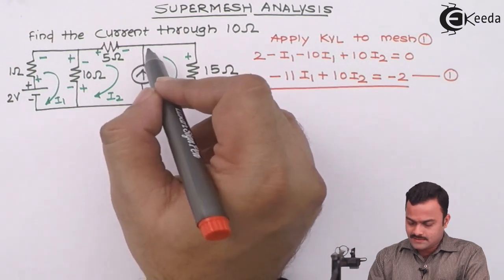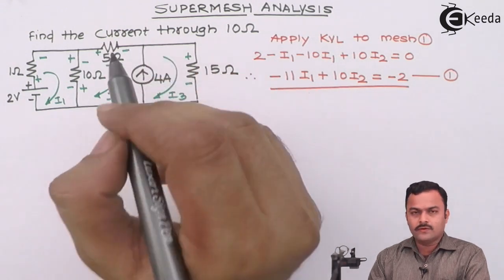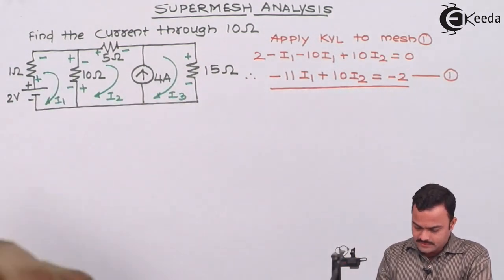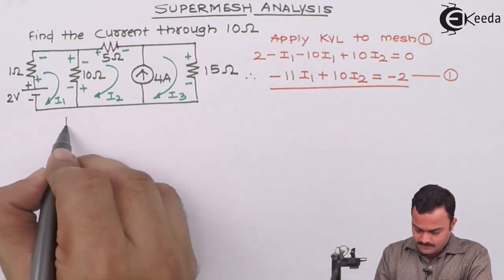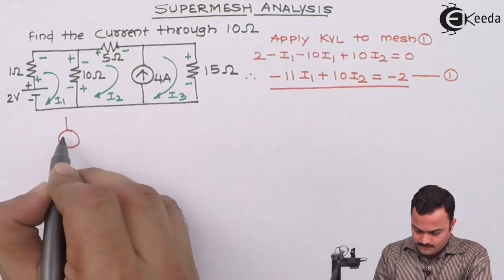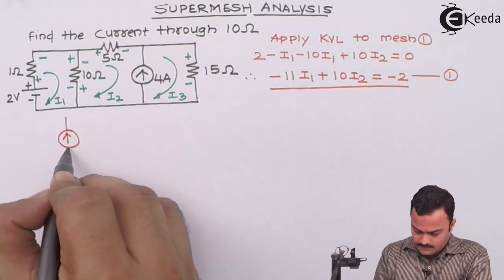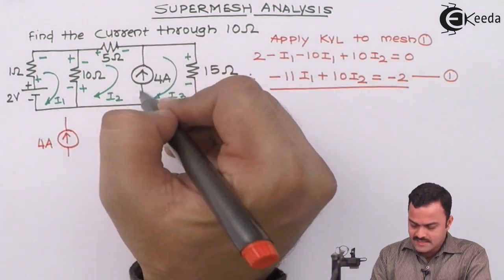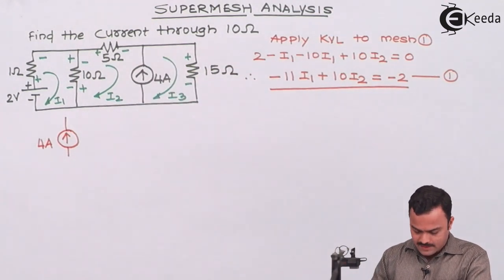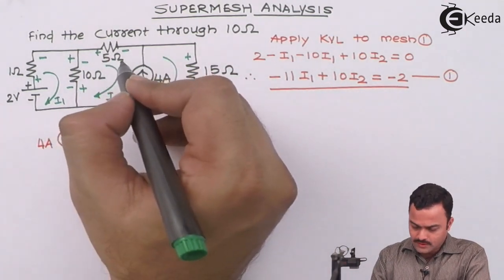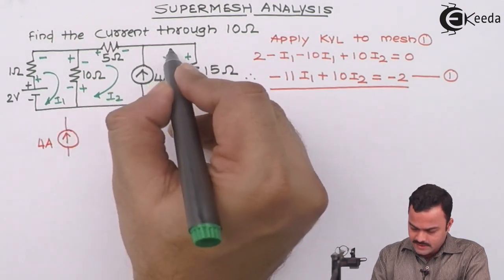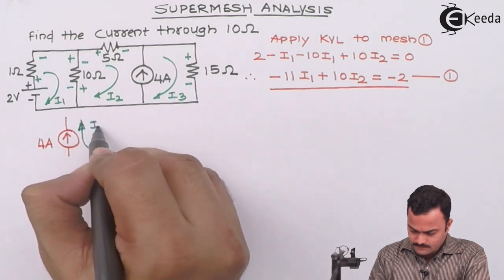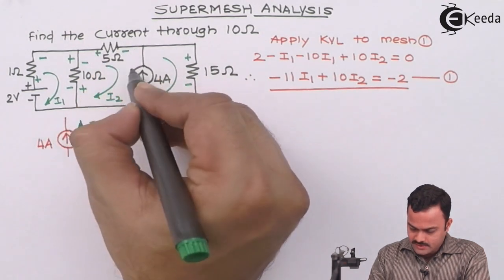So the problematic structure in this circuit is this current source. So what we'll do, we'll take this current source outside the circuit. So I will take this current source. Basically, this current source is nothing but this branch current. And for this branch current, we'll have two currents as far as mesh currents are concerned. One is I3 in this direction.